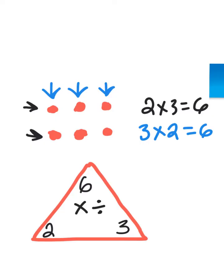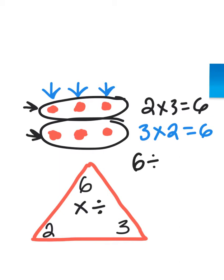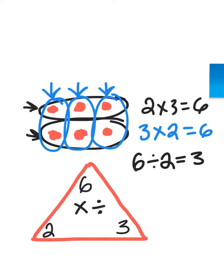So, again, for example, I can divide 6 into two groups and have three in each group. 6 divided into two groups would give me three in each group. Or, I could have 6 divided into three groups. 6 divided into three groups would leave me two in each group. So, as you can see, this one fact family triangle represents a total of four types of number sentences. Two multiplication problems and two division problems.